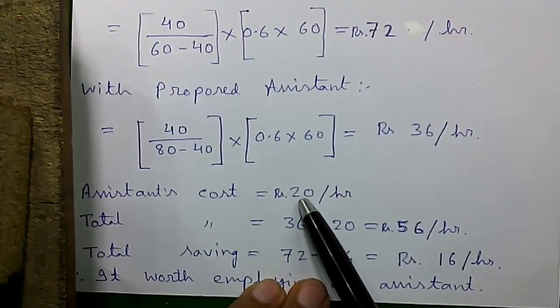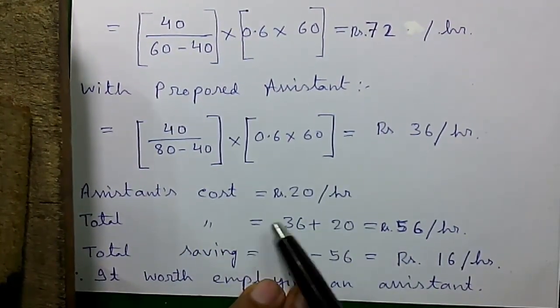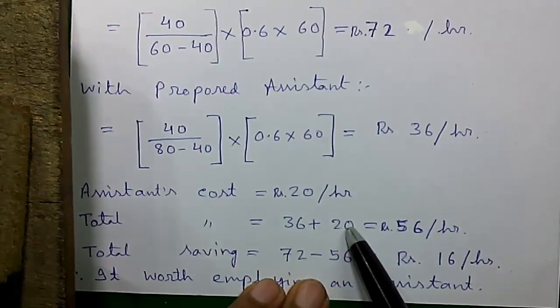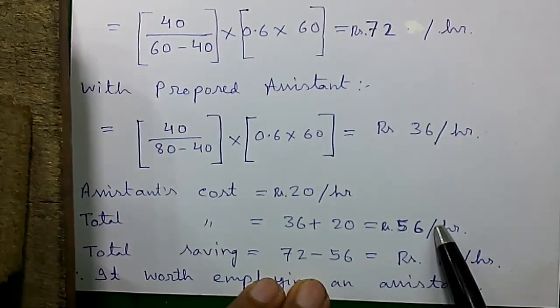Now the assistant cost is Rs. 20 per hour. So the total cost is 36 plus 20 that equals Rs. 56 per hour.